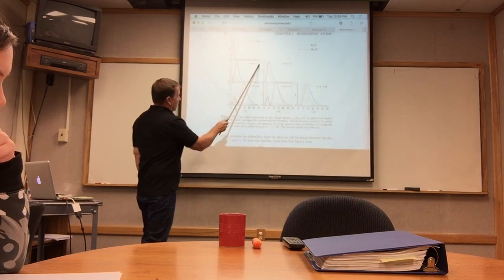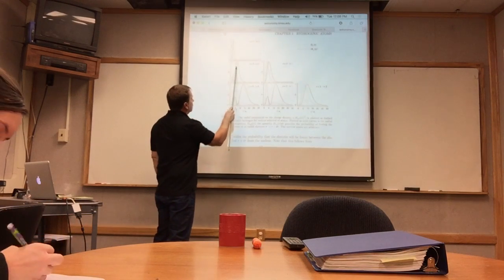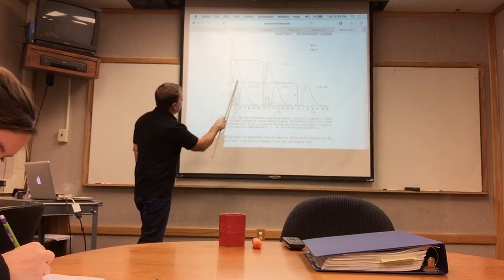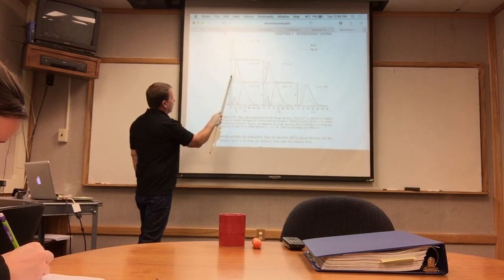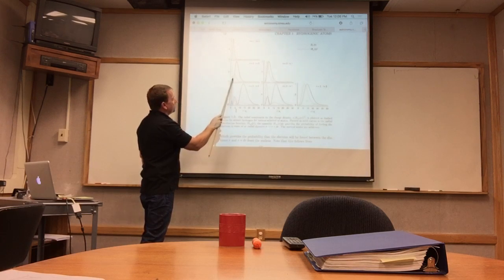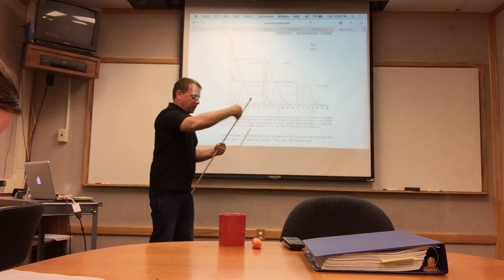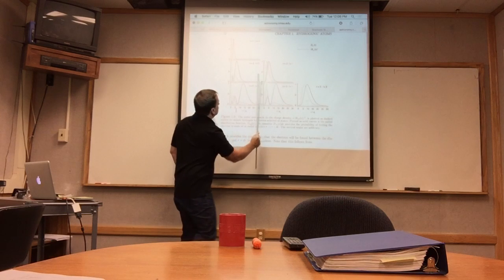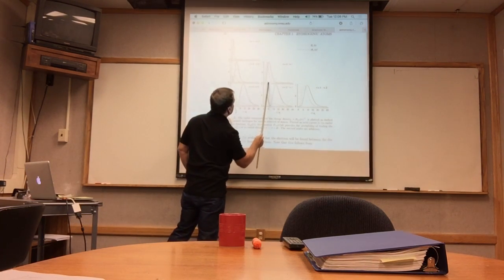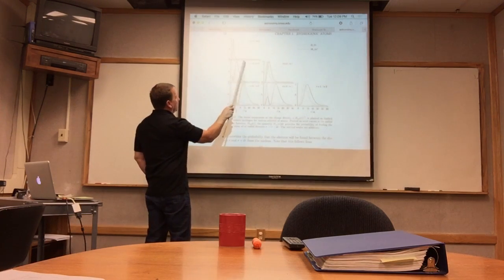Going to n equals 2, L equals 0 - no nodes in the polar direction - you get two peaks, with the highest probability out around 5-point-something Bohr radii, and a smaller peak of probability near the Bohr radius. If you're at n equals 2 with a single node - the p orbitals - you have only one peak in your probability distribution at about 4 Bohr radii. The p orbitals' probability density peaks a little bit inside the n equals 2, L equals 0 density.